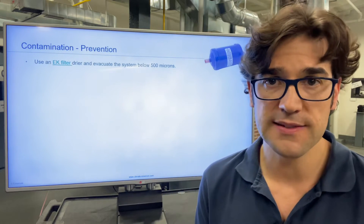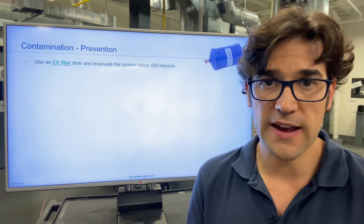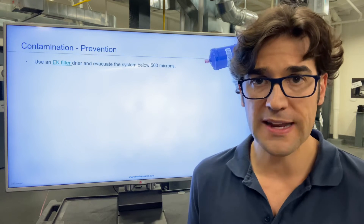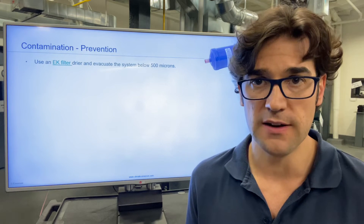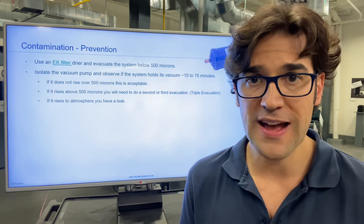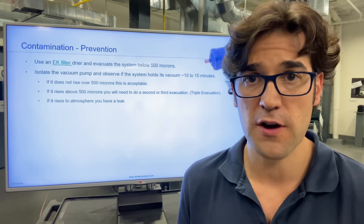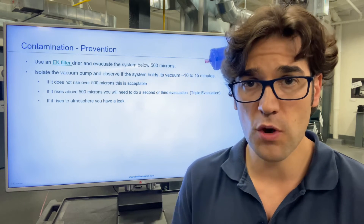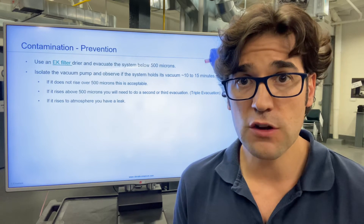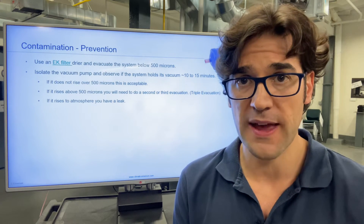So what do you do? Well, anytime you open a system you need to replace the filter dryer. Add a new EK filter dryer, clean that system up, pull out any moisture anytime you open that system. To pull a proper evacuation, you want to pull below 500 microns, hold below 500 microns, and follow the manufacturer spec.